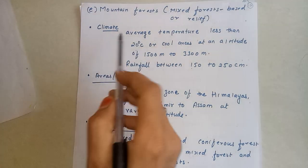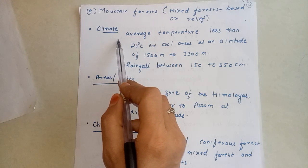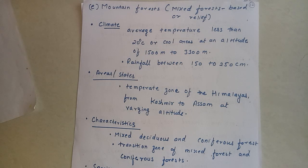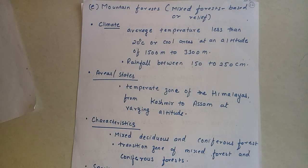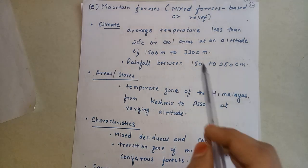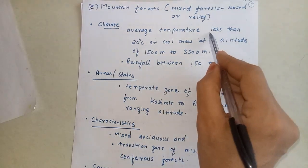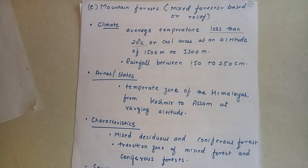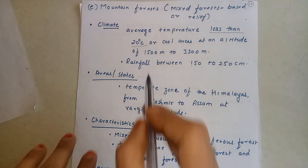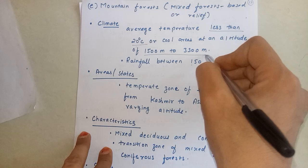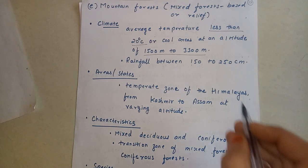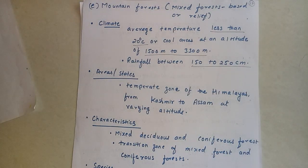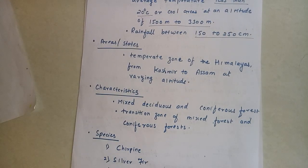First we will study about climate. What are the climate conditions of these types of forests? These forests are found in areas with average temperature less than 20 degrees Celsius, that is cool areas, at an altitude of 1500 meters to 3300 meters. They occur in areas getting rainfall between 150 to 250 centimeters. Now, come to area.